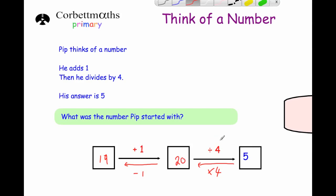So whenever we're doing questions like this, it's very important to remember the steps in order. Pip added one then divided by four, so working backwards we times by four and then take away one.